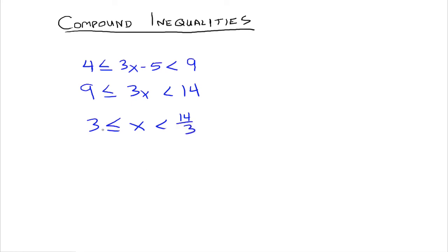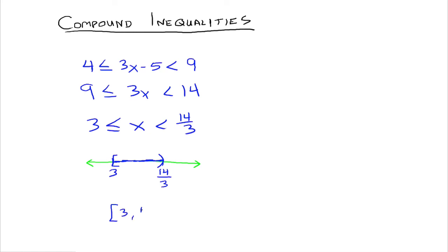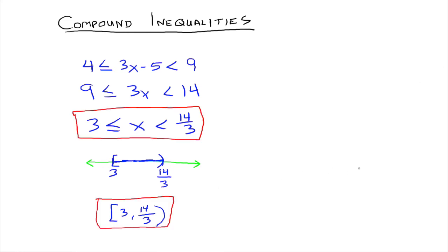We want numbers that are greater than 3, but at the same time less than 14 thirds. 14 thirds is a little more than 4 and a half — about 4 and 2 thirds. On a number line, we have 3 and 14 thirds. 3 is included because of the less than or equal to, and 14 thirds gets a parenthesis. In interval notation, it's 3 to 14 thirds.